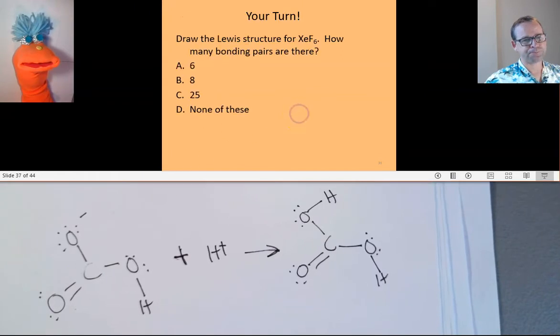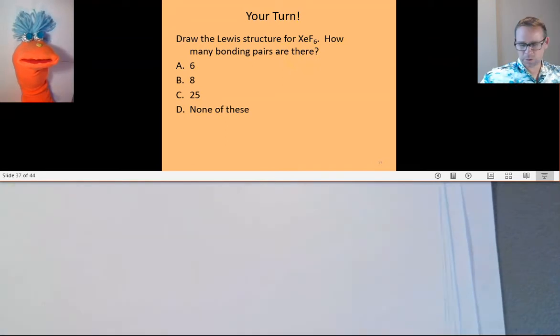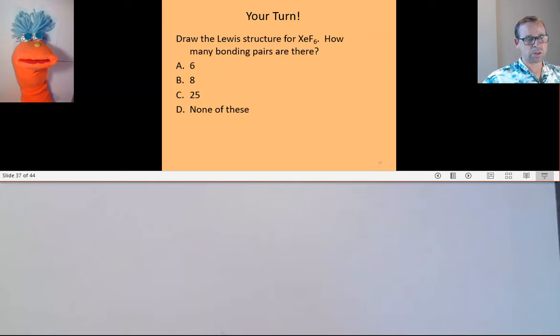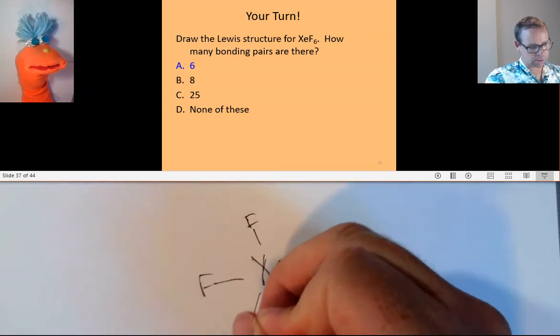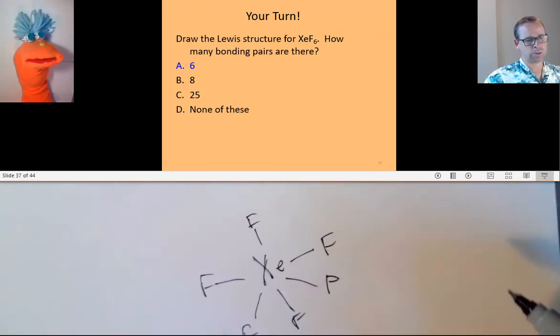So try this one at home. Draw the Lewis dot structure for xenon hexafluoride, XeF₆. And we want to find how many bonding pairs are there. Now we have what are called non-bonding. We have bonding. We have lone pairs. That's another name for non-bonding. So this one is asking for bonding pairs. Okay, solve it at home. Frank or Fred, what do you think? You always call me Frank. I know, I know. Sorry about that. The answer is A.